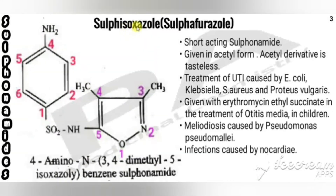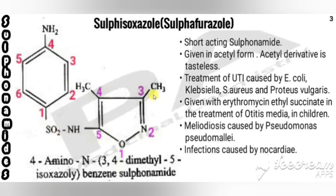The next drug is sulfisoxazole, also called sulfafurazole. From the name itself we can tell it has an isoxazole nucleus, otherwise called furazole. It has the sulfanilamide moiety connected to an isoxazole ring bearing two methyl groups at the third and fourth positions.